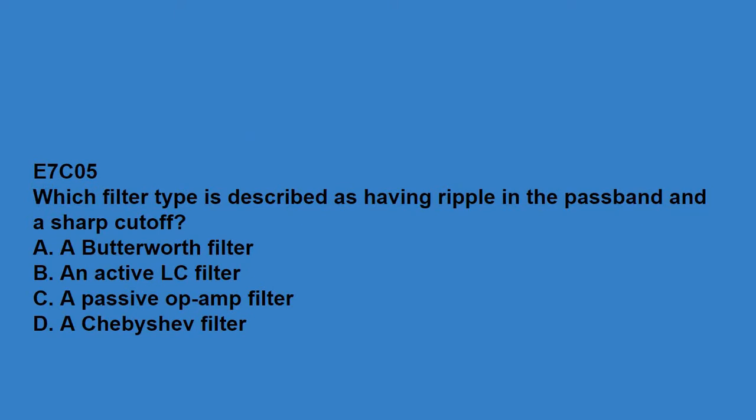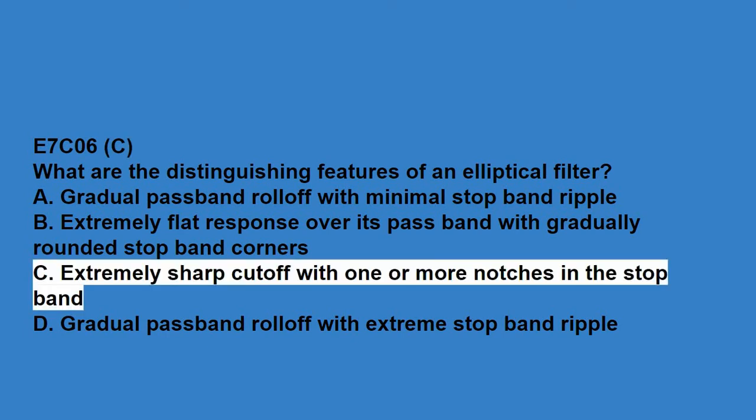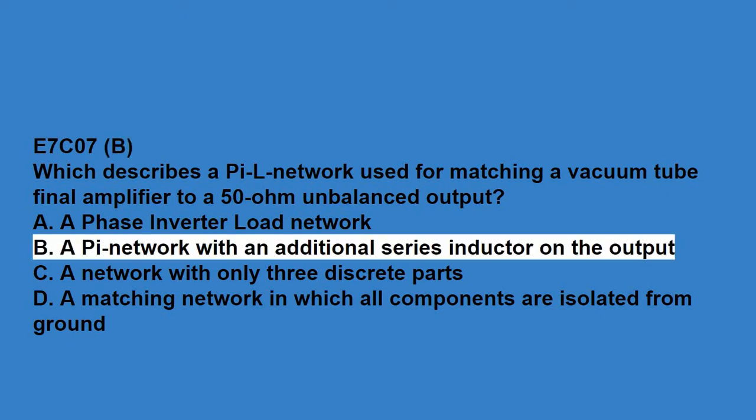E7C04, how does an impedance matching circuit transform a complex impedance to a resistive impedance? It cancels the reactive part of the impedance and changes the resistive part to a desired value. E7C05, which filter type is described as having ripple in the passband and a sharp cutoff? A Chebyshev filter. E7C06, what are the distinguishing features of an elliptical filter? Extremely sharp cutoff with one or more notches in the stop band.